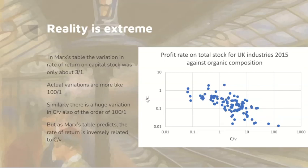In Marx's example, the variation was roughly 3 to 1 in the rate of return on capital stock. Data taken from the British economy show a variation of closer to 100 to 1 in the return on capital stock, with a huge variation in C/V — a variation of the order of 100 to 1, or even more; the C/V ratio looks more like 1,000 to 1. But as Marx's table predicts, the rate of return is inversely related to C/V.